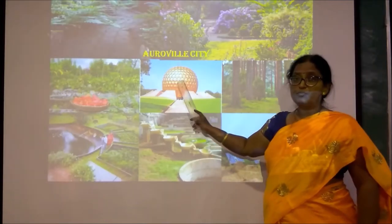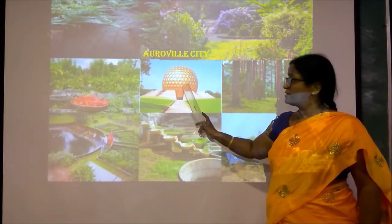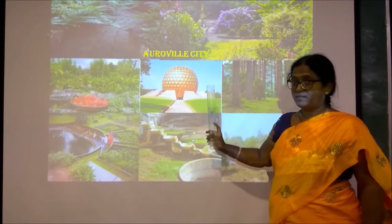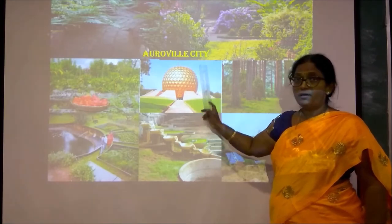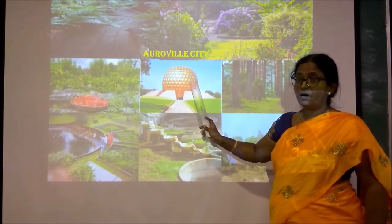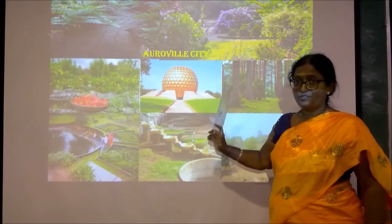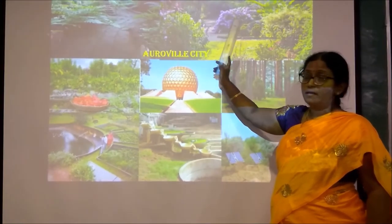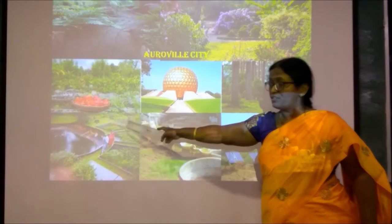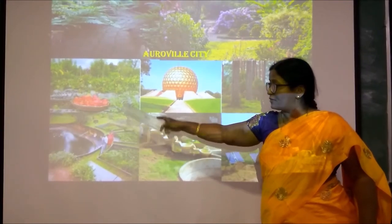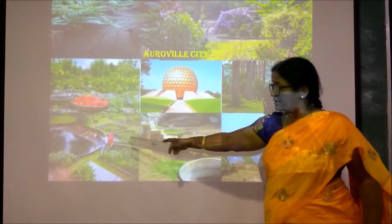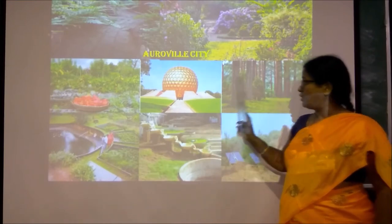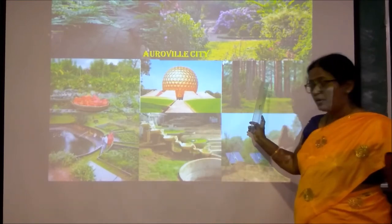This is Matra Mandir, a spiritual center in Auroville city, mainly meant for spiritual activities and meditation. This is a botanical garden in Auroville city. Wastewater is treated here, and after treating the wastewater it is used for fields, gardens, and the forest cover in Auroville city.